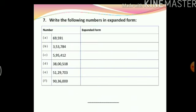Here is the last question of this exercise: write the numbers in expanded form. We discussed how to find the expanded form of large numbers — there are two ways, in words and in figures. I would suggest that you write the answers in figures. For example, the number 69591: in figures the answer will be 60,000 plus 9,000 plus 500 plus 90 plus 1. I hope you will be able to solve all these questions easily.